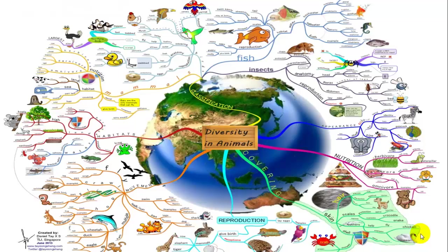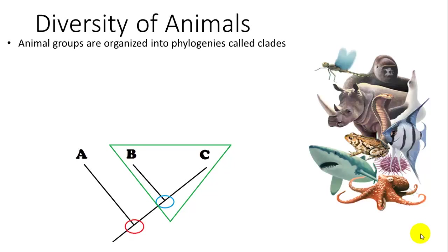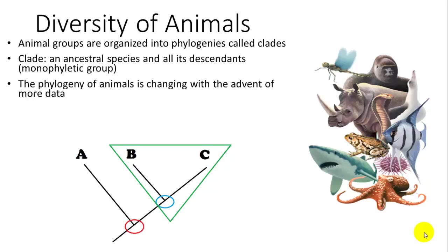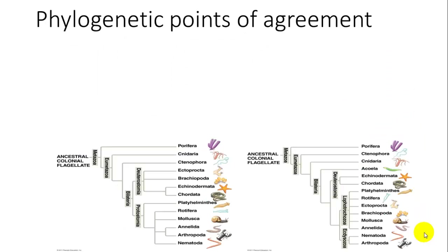Now that we've covered the lead-up to classifying animals, gone through the history of where they appear in the fossil record, and talked about evolution, we'll put all these things into context and discuss the diversity of animals. Animals are grouped into phylogenies called clades. The phylogeny is a hypothesis that has been changing as we get more information. Information used to base relationships includes morphology, fossils, and molecular data like DNA, RNA, and proteins.